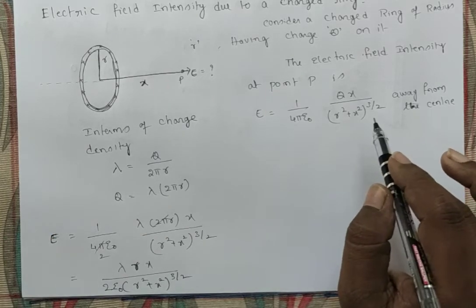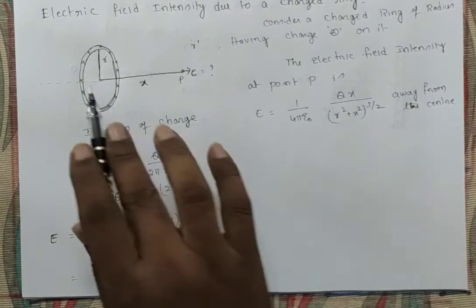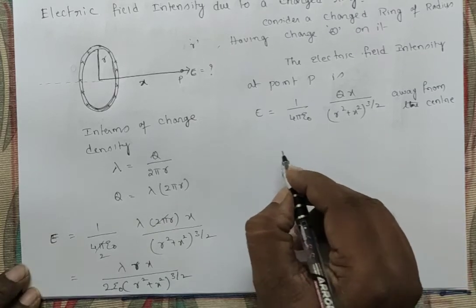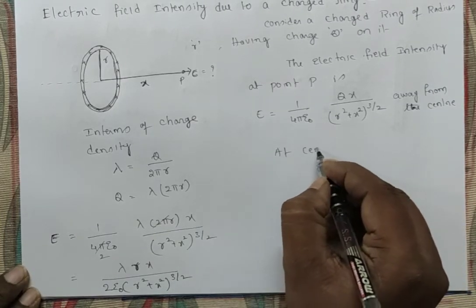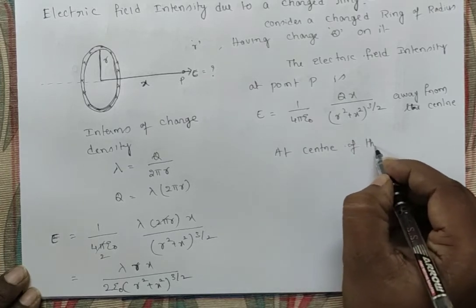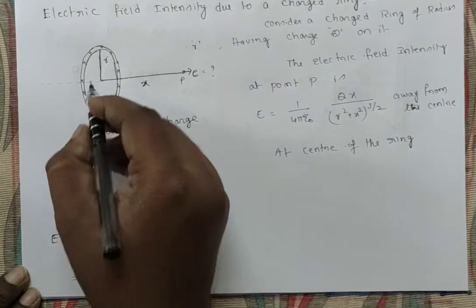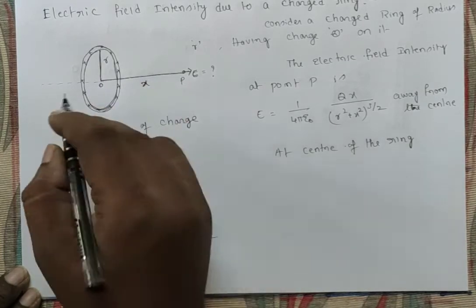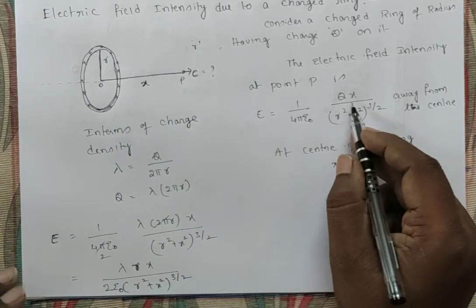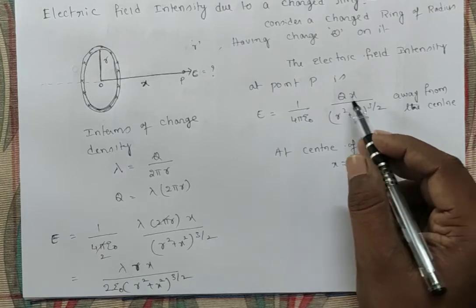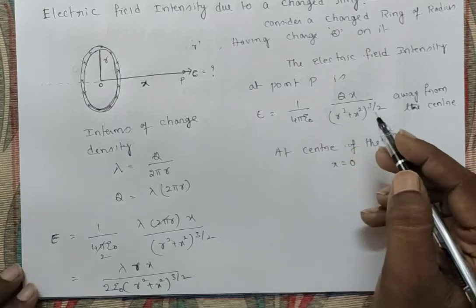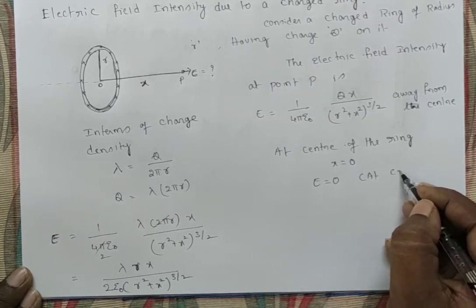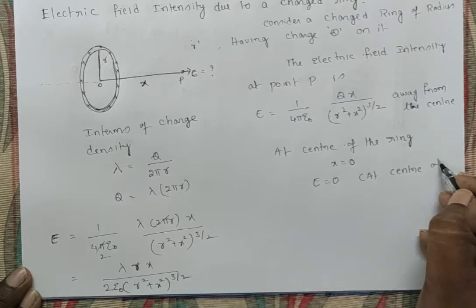At the center of the ring, if X equals 0, substituting into the expression makes the complete expression become 0. So the electric field intensity at the center of the ring E = 0.